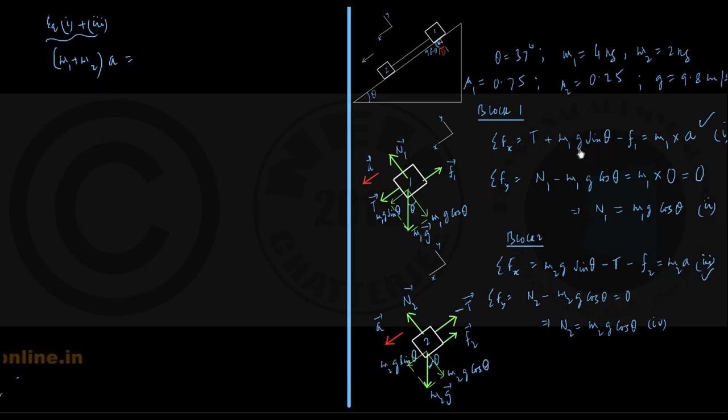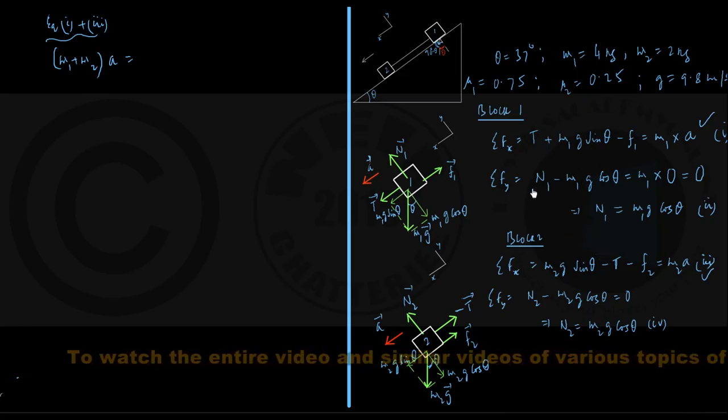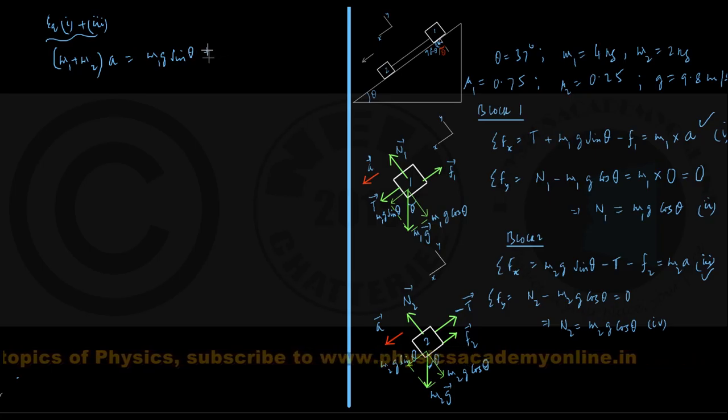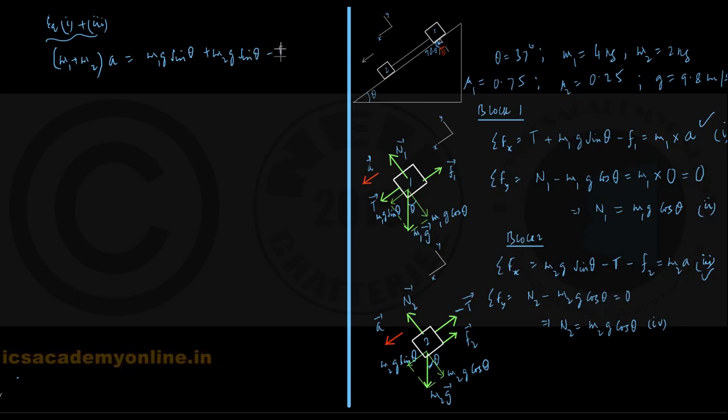And as you can see on the left hand side, t plus m1g sin theta minus f1 plus m2g sin theta minus t minus f2. So, the t's cancel out and we have got m1g sin theta plus m2g sin theta minus f1 minus f2.